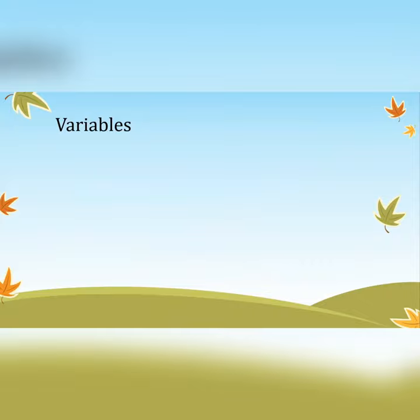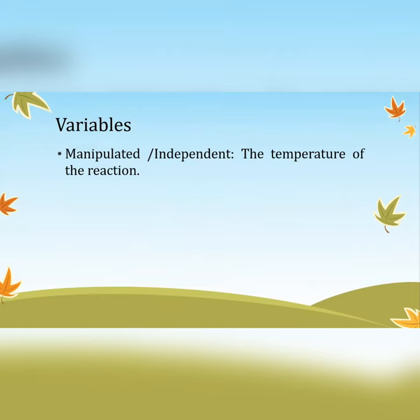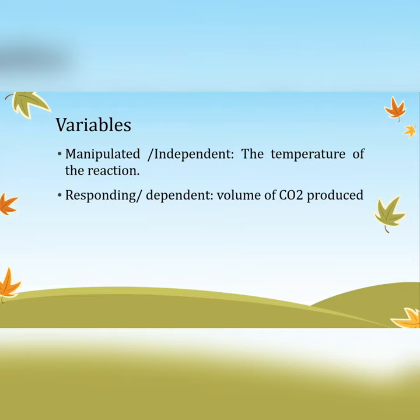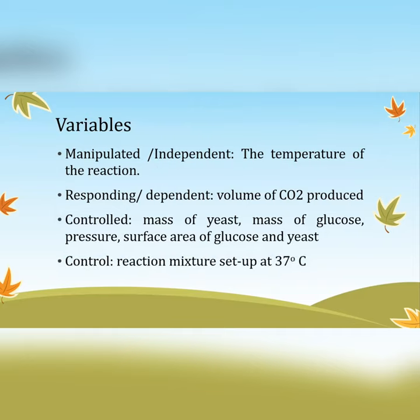Now for my variables: my manipulated or independent variable is the temperature of the reaction — I'm investigating how temperature affects enzymatic activity. The responding variable is the volume of carbon dioxide produced. For controlled variables — things we keep constant to make the reaction fair — these include the mass of yeast, pressure, surface area, and mass of glucose, among others. Your examiner usually only wants one.